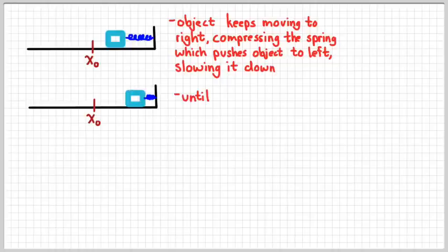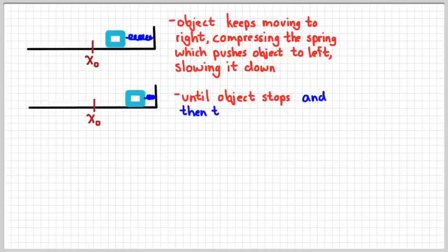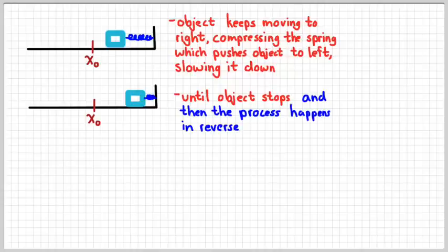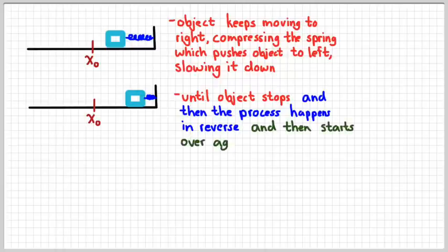Eventually, the object will compress the spring so much that the spring will be squeezed all the way to its maximum compression, and the object is going to stop. It's going to throw it the other way, to the left, and the whole thing basically goes backwards. And then when we get back to our original position, then the whole process starts over again. That's the basic idea behind simple harmonic motion. So we go from one extreme to the other, back and forth.